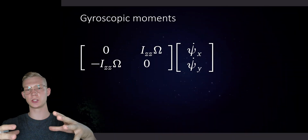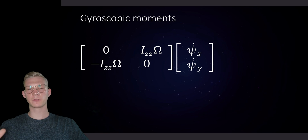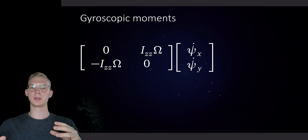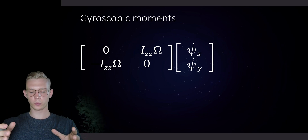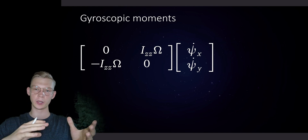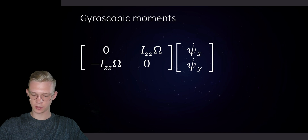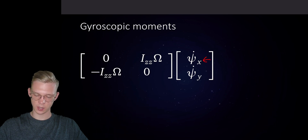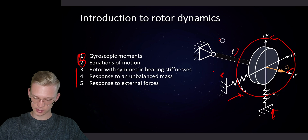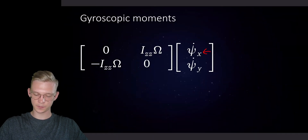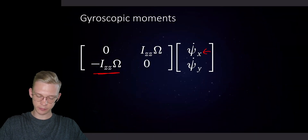First we have to understand the gyroscopic moments. They are very special because they introduce moments in the other degree of freedom. If we tilt around one degree of freedom we will introduce moments in the other. So if we have a rotation cx — looking at this system, x is in this direction — if we have a positive tilt going down, we will actually introduce a moment around the negative y direction.